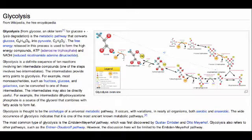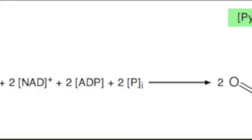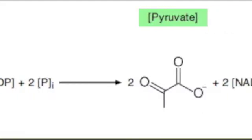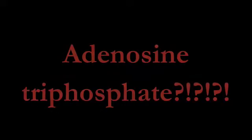Glycolysis is the sequence of reactions that converts glucose into pyruvate with a concomitant production of a relatively small amount of adenosine triphosphate. That's ATP for all you sucka hoes!